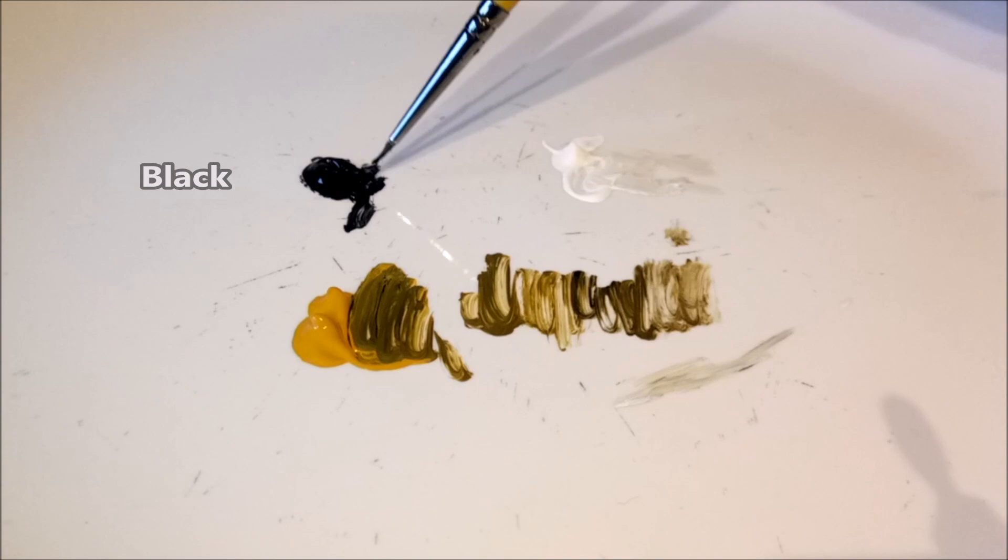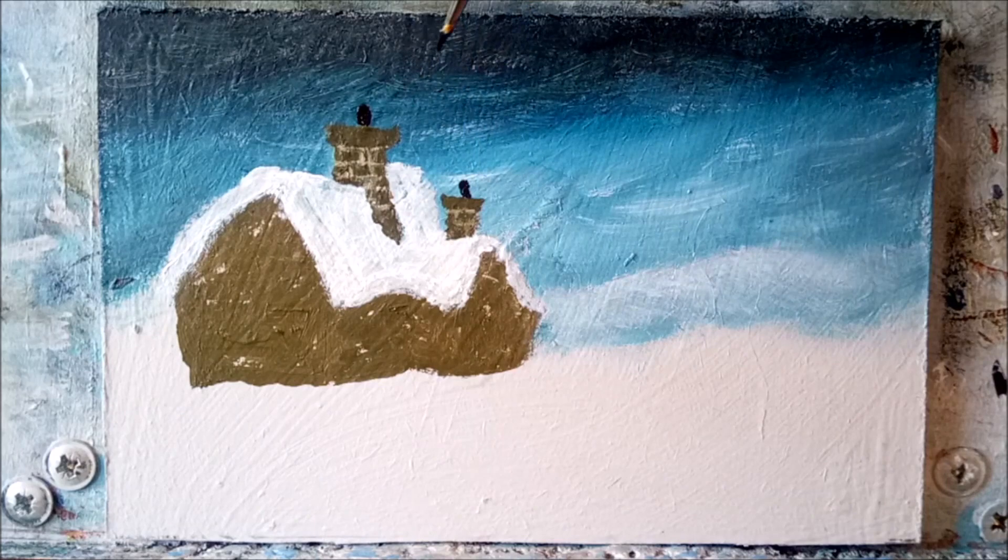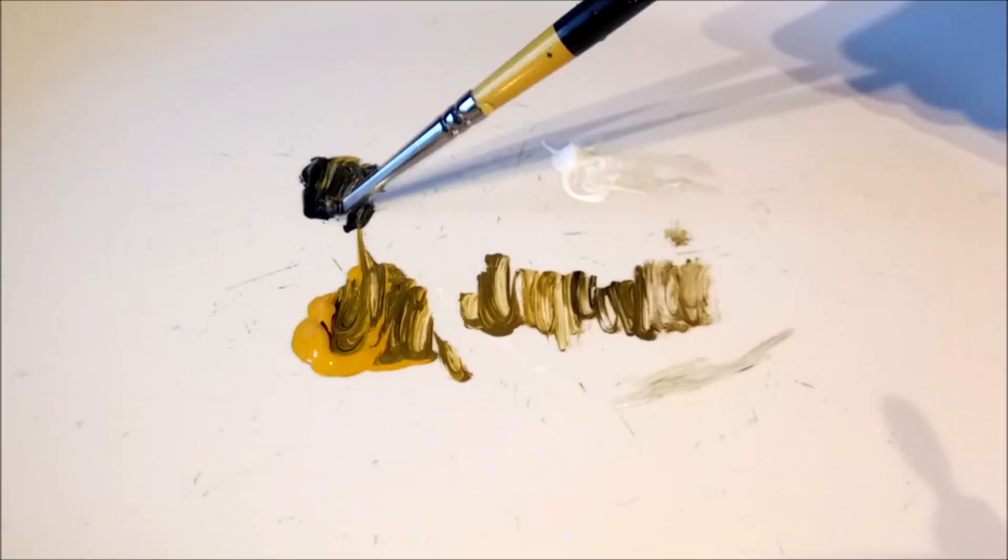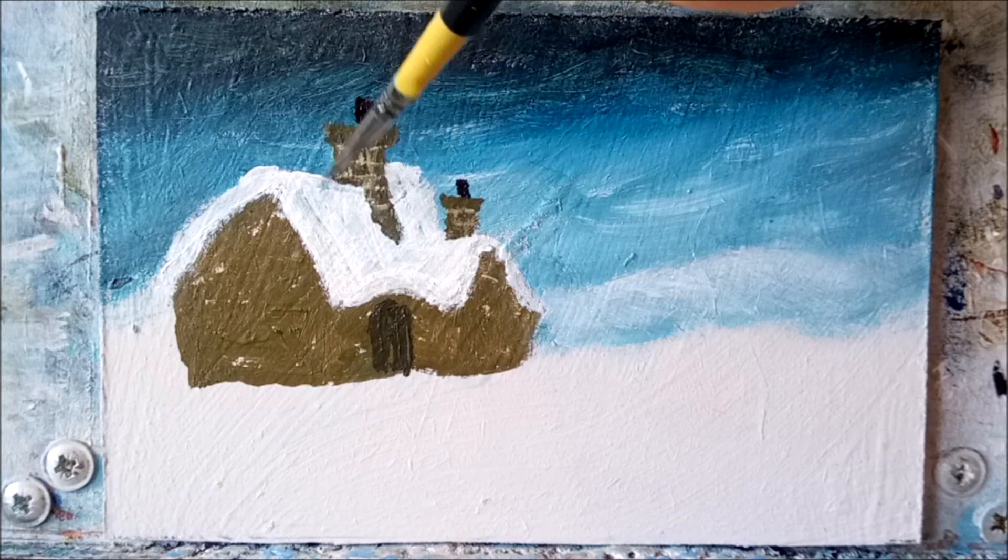Black now for the chimney pots, and you might want to paint them on a little bit wonky as well, just to add some extra character there. That's a good one. This is a fairly dark color now that I'm mixing up and we'll use this to paint in the porch.